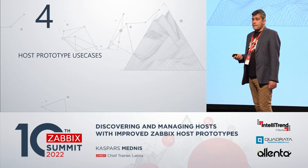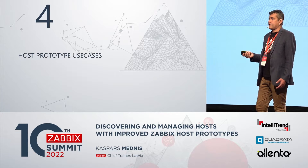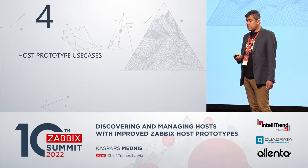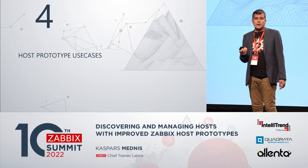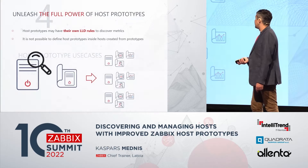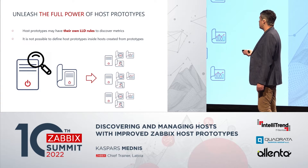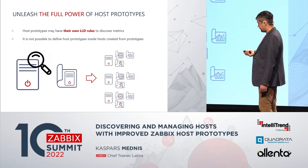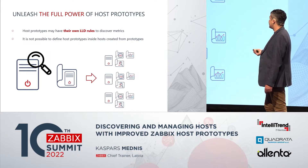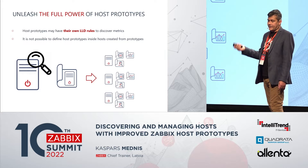Now let's talk about how host prototypes are used. You have a host, you have a low-level discovery rule, and the host prototype creates hosts for you. On those hosts created from the prototype, you can have more low-level discovery rules — so you have an LLD rule with a host prototype that creates hosts, and inside those hosts another LLD may discover more metrics.